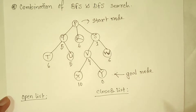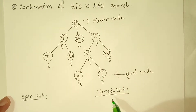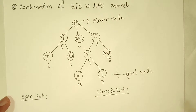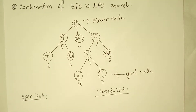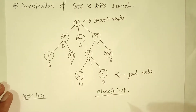Whenever we add a node into our closed list we have to see whether that node is our goal node or not. If that node is our goal node then we stop our search algorithm and perform backtracking from that node. If that node is not our goal node then we have to perform this algorithm further. So let us perform Best First Search on this tree.